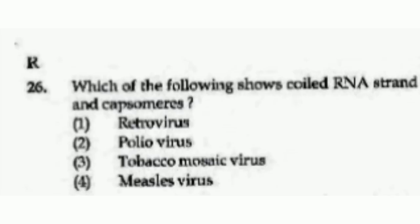Which of the following shows a coiled RNA strand and capsomeres? The options are Retrovirus, Poliovirus, Tobacco Mosaic Virus, and Necrosis virus. The right answer is option number 3, Tobacco Mosaic Virus.